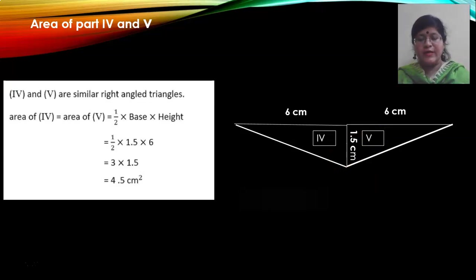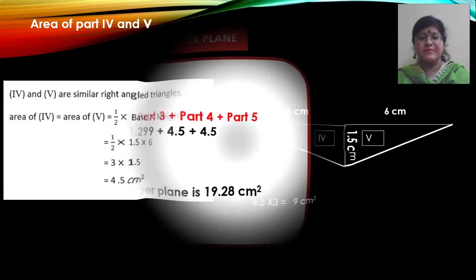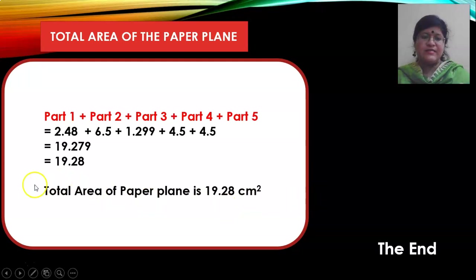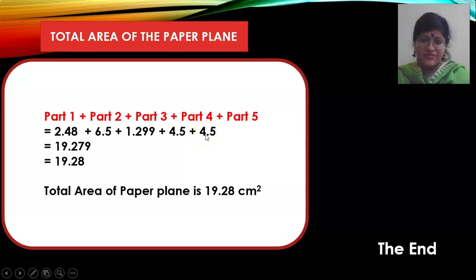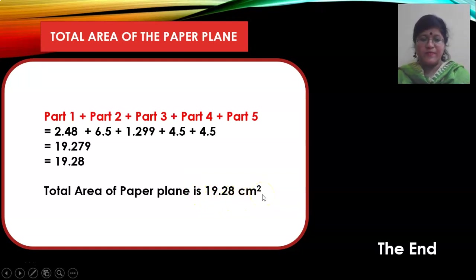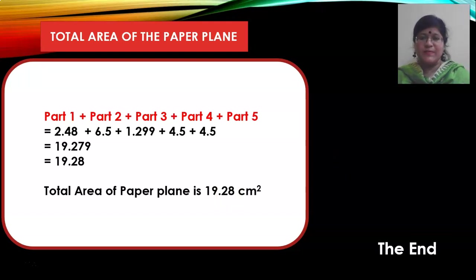Now let us find the total area of the paper plane by adding the areas of all five parts. Part 1 (triangle/nose) ≈ 2.48 cm², part 2 (rectangle) = 6.5 cm², part 3 (trapezium) ≈ 1.30 cm², part 4 (right triangle) = 4.5 cm², part 5 (right triangle) = 4.5 cm². The total area of the paper plane is approximately 19.28 cm². This was the second problem of exercise 12.2, concluding both exercises from the chapter Heron's Formula. Thank you.